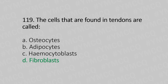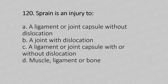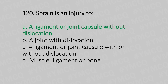Question number 120: Sprain is an injury to — Option A: a ligament or joint capsule without dislocation, Option B: a joint with dislocation, Option C: ligament or joint capsule with or without dislocation, Option D: muscle, ligament, or bone. The answer is Option A, a ligament or joint capsule without dislocation.